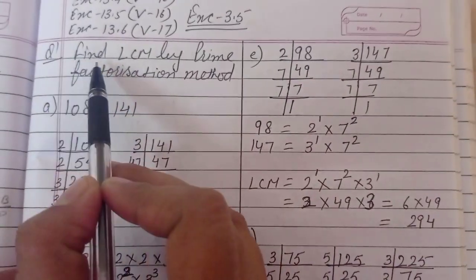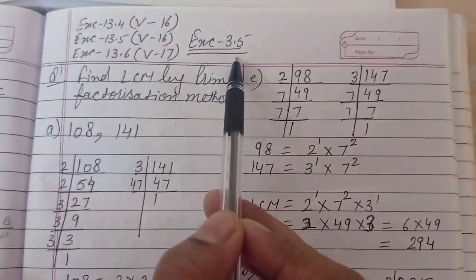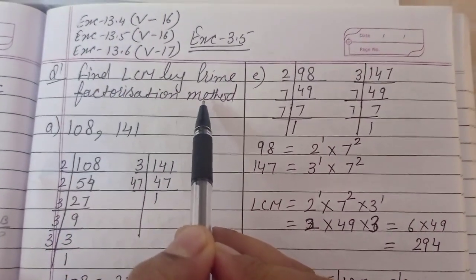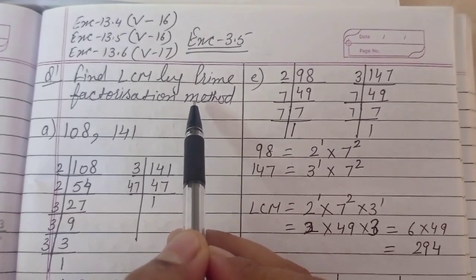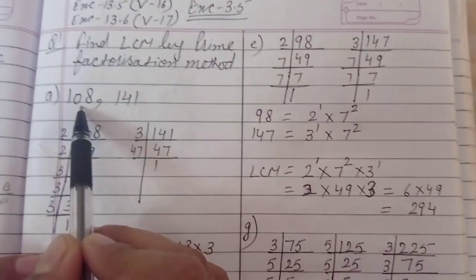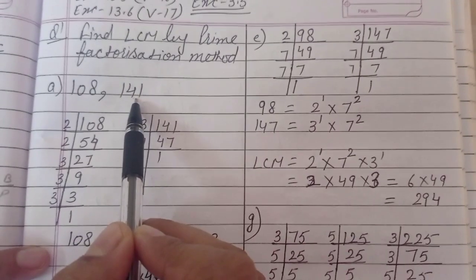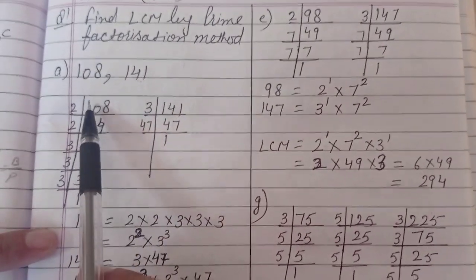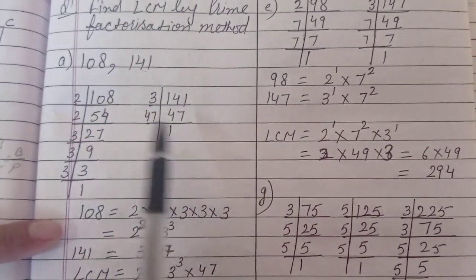Here, the first question of Exercise 3.5: find LCM by the prime factorization method. So children, understand it carefully. These are the two numbers whose LCM you have to find out using the prime factorization method. For this, first of all, we will find prime factors.